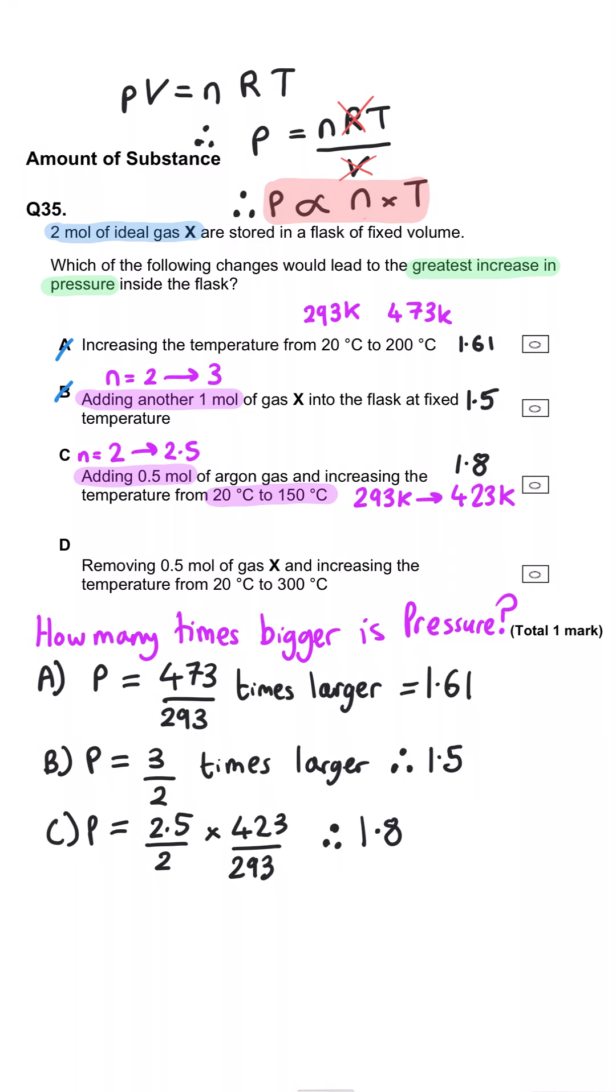Last of all, we're removing one half of a mole of gas. So it's going from 2 down to 1.5. And the temperature is going from 293 Kelvin to 573 Kelvin. And so this is going to be 1.5 divided by 2 multiplied by 573 divided by 293, which gives us a total of 1.47, which is smaller than 1.8. So C is the correct answer.